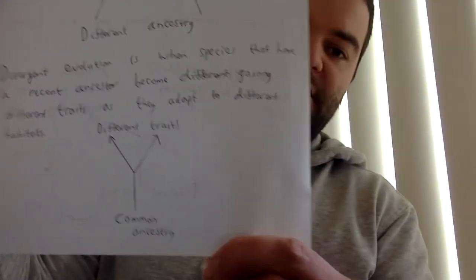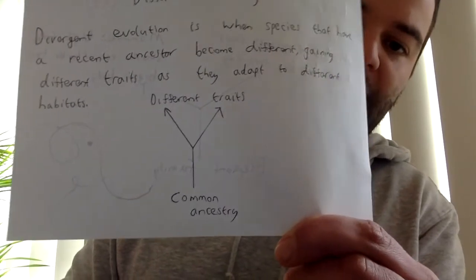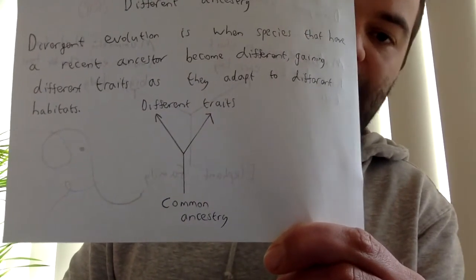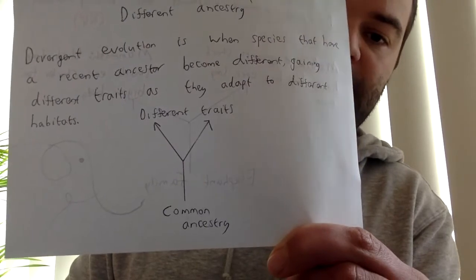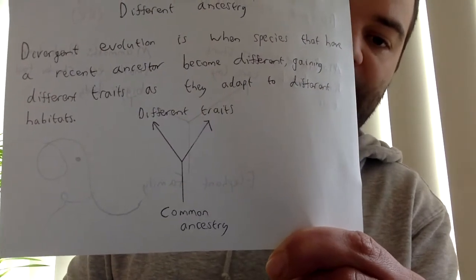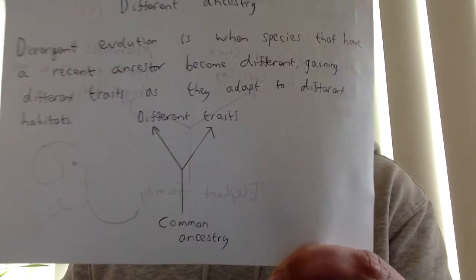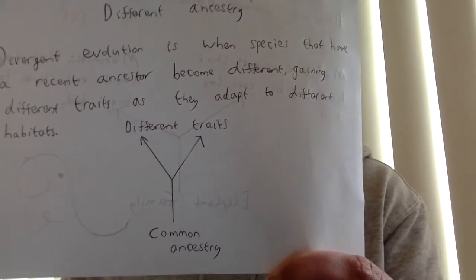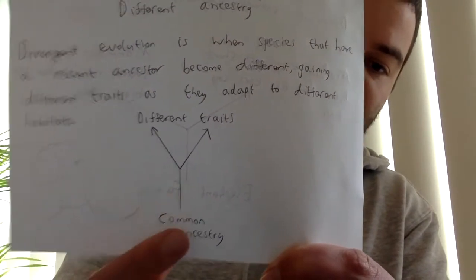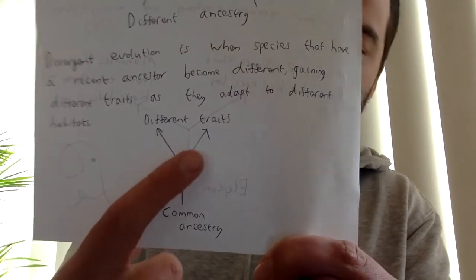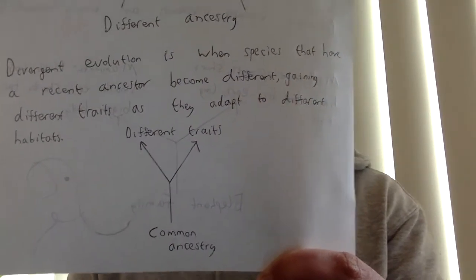The other type is divergent evolution. That's when two species that have a recent common ancestor become different over time as they adapt to new habitats. It occurs when speciation is happening and after speciation happens as well. In the diagram, I've got them coming from a common ancestor, but they gain different traits over time as they adapt.